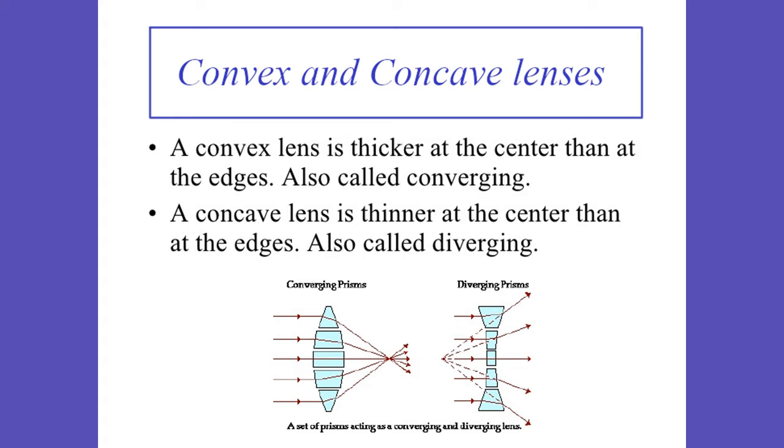A convex lens is thicker at the center than at the edges, also called converging. A concave lens is thinner at the center than at the edges, also called diverging.